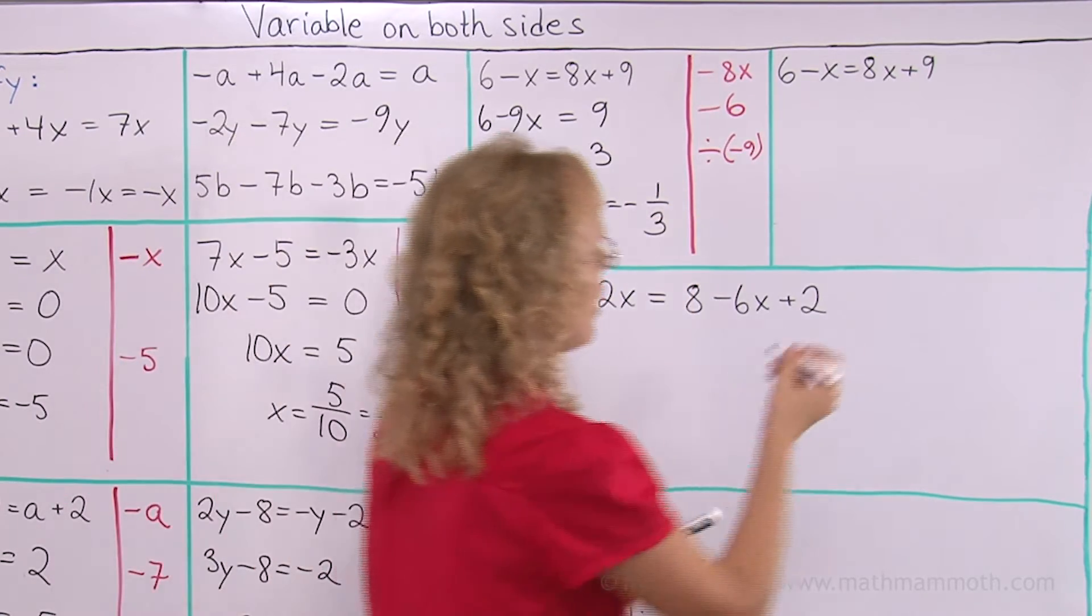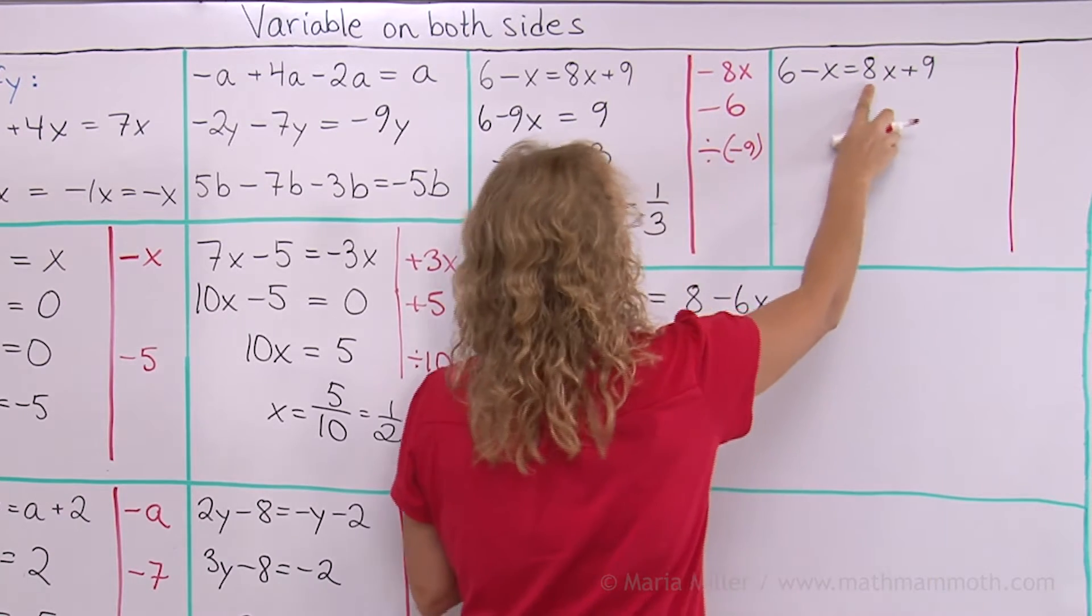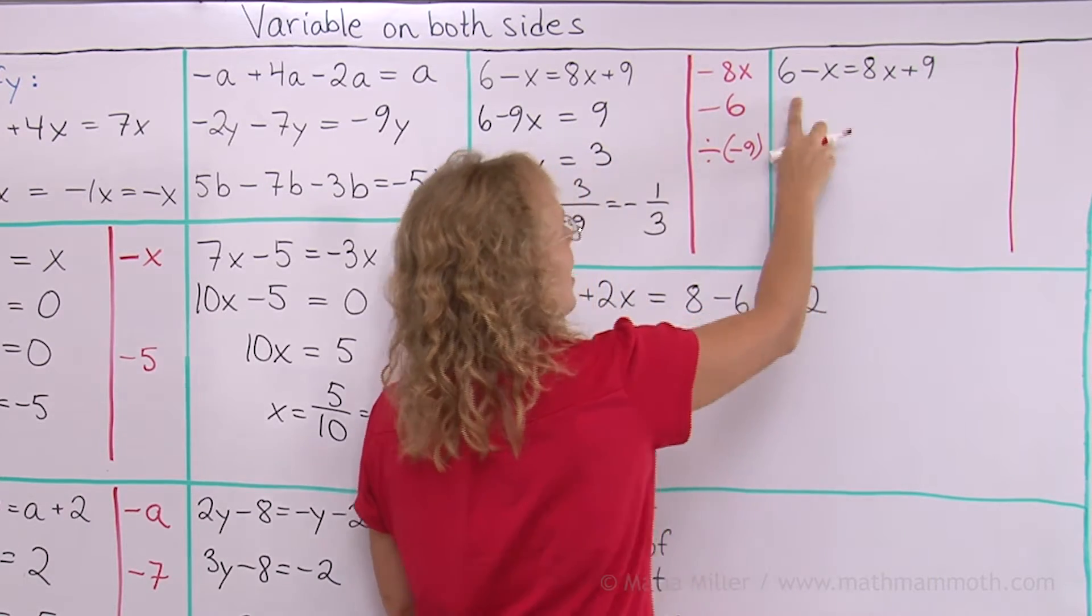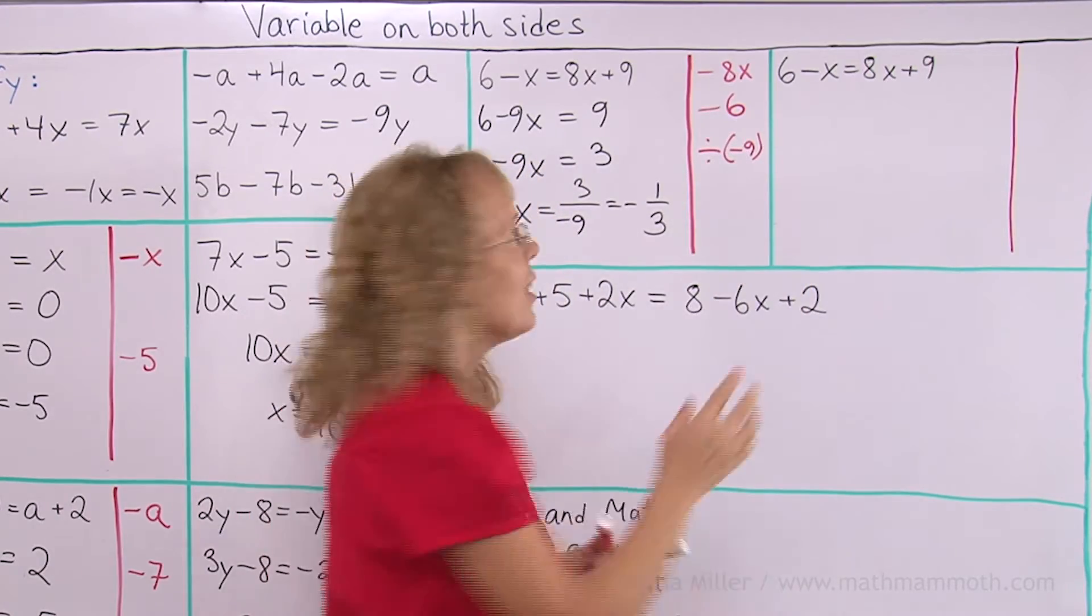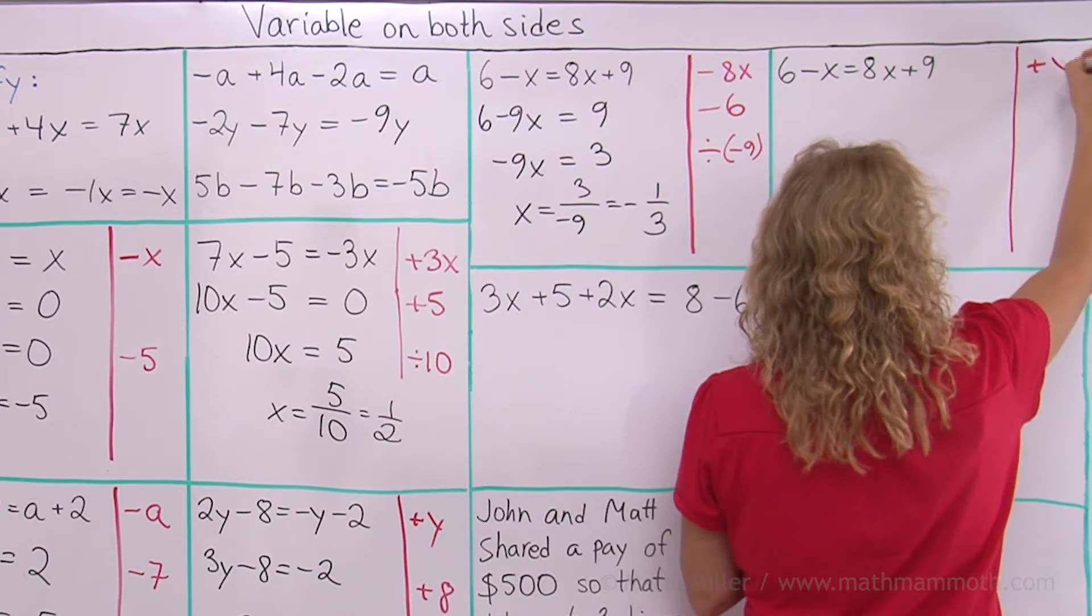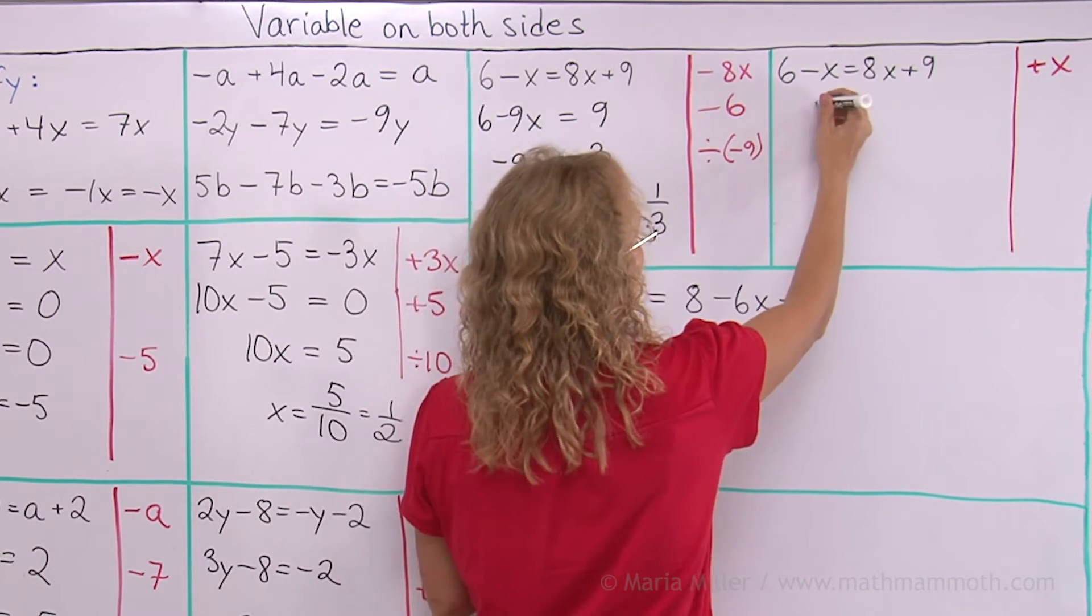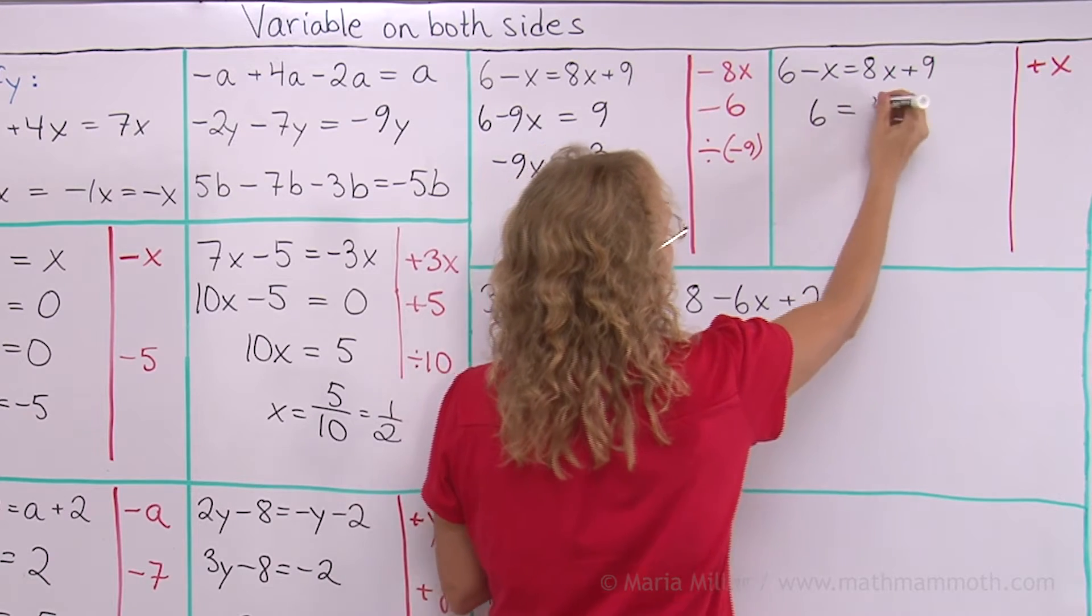Now let's do it the other way around. Instead of subtracting 8x, I will add x to both sides, because then this minus x will disappear. I will add x to both sides. And so this minus x disappears, and I am left with 6 alone, but here I get 9x.